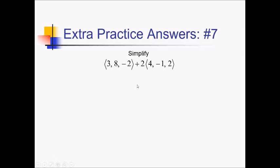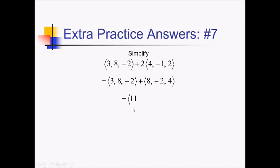To do this vector algebra, let's start by distributing this 2 to the second vector. So this is going to be the vector (8, negative 2, 4). And now we'll just add the x, y, and z values separately. So 3 plus 8 is going to give us 11, comma, 8 plus negative 2 is going to be 6, comma, negative 2 plus 4 is going to be 2.